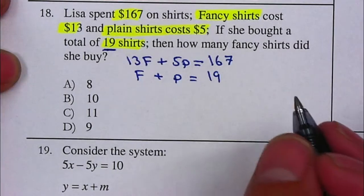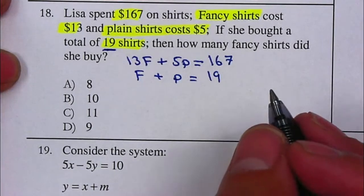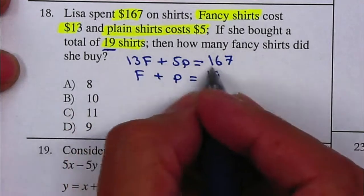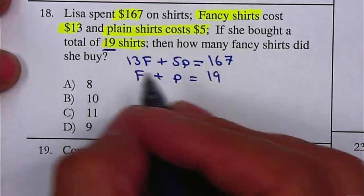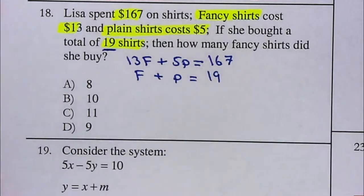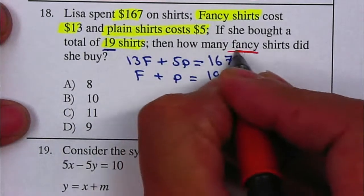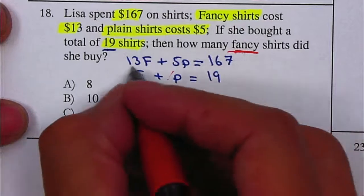Now we can decide whether to solve by combination or substitution. Since they're lined up - the F's, the P, the equal sign, and then the number - they're both in standard form, so we can do combination. Since it's asking for how many fancy shirts, I'm going to cancel the P's so I can get my answer right away.